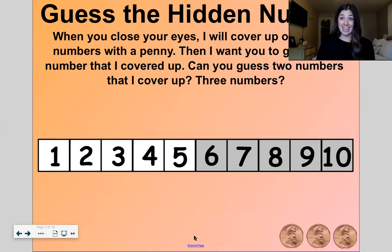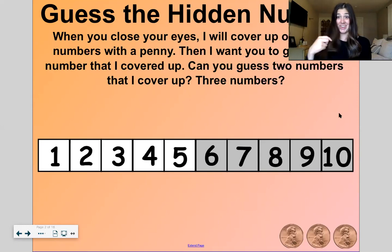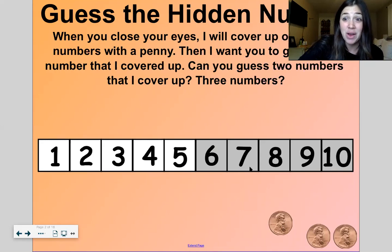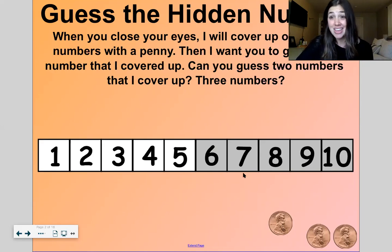So let's get started. This is kind of like beep the number. But instead, I'm going to need your honesty here and your integrity. I'm going to have you close your eyes, and I'm going to cover up one of these numbers with a penny. Abraham Lincoln is on this penny. I'm going to cover up one of these numbers. Then I'm going to say, okay, open your eyes, and I want you to guess the number that I covered up. So you're going to have to look to the number to the left and to the right to find out which number I covered up.